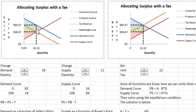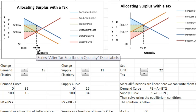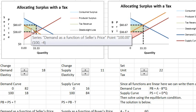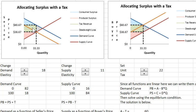This green rectangle which has height equal to the tax and the base is equal to the volume of trade in the equilibrium after the tax is the revenue that goes to the government. That's the unit tax times the volume after the tax has been imposed.